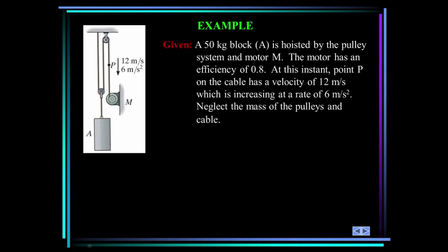So let's do an example. Here we have a 50 kilogram block. It's hoisted by this pulley system and this motor M. The motor has an efficiency of 0.8. At this instant, point P on the cable has a velocity of 12 meters per second, which is increasing at the rate of 6 meters per second squared. Neglect the mass of the pulleys and the cable. Find the power supplied to the motor at this instant.